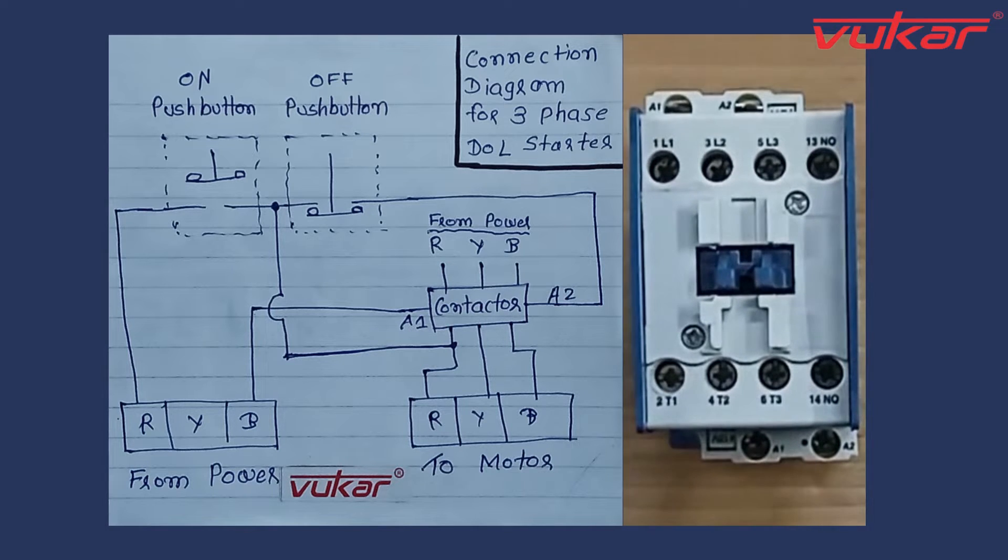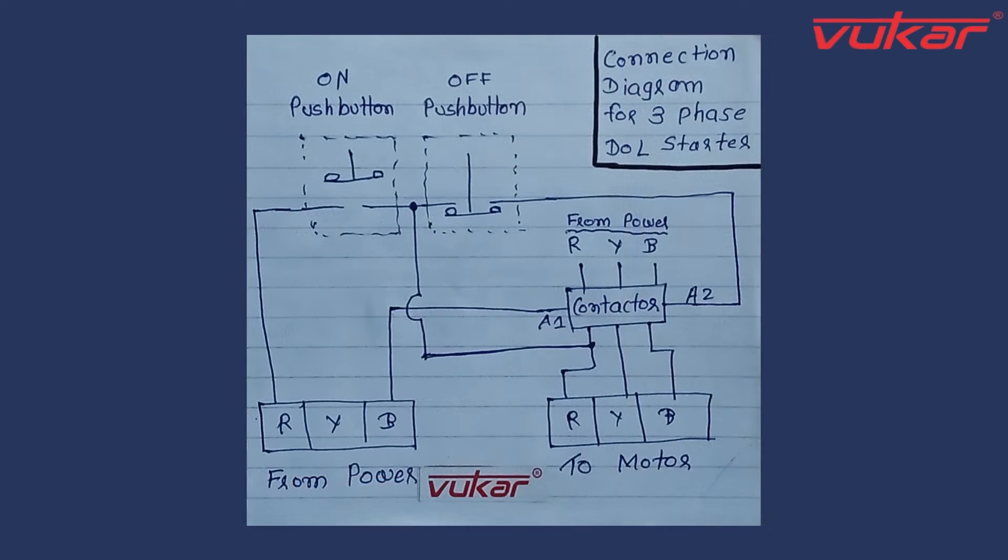And output terminal of contactor T1, T2 and T3 is connected with output terminal that is a motor wire terminal. So that terminal directly goes to the motor.